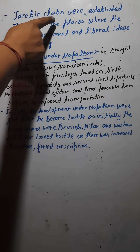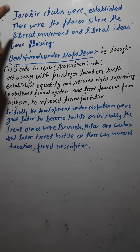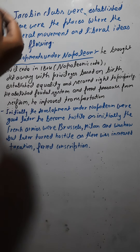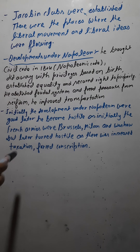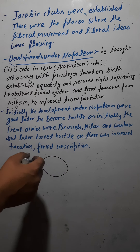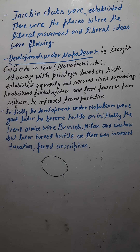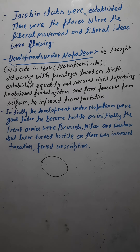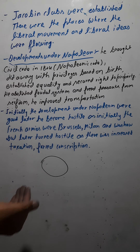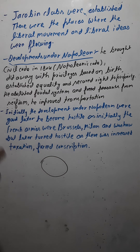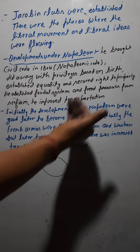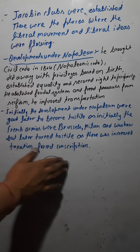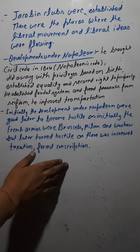The first point is that Jacobin clubs were established. These were the places where liberal movements and liberal ideas were flowing. These Jacobin clubs were established in different areas of Europe. They were friends of the people, friends of the Constitution, and friends of freedom — essentially promoting liberal ideas and a liberal movement.